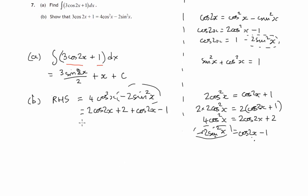And let's see what we've got. We've got two lots of cos2x plus cos2x, that's three lots of cos2x, and two minus one gives us plus one, and that's identical to the left hand side. So we're done.